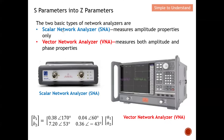There are mainly two types of network analyzer. The cheaper one is the scalar network analyzer (SNA), while the more expensive one is the vector network analyzer (VNA). The key difference: for SNA, they measure the amplitude property only. While the VNA measures both the amplitude and also the phase property. So this is the key difference between the Scalar Network Analyzer and the Vector Network Analyzer.